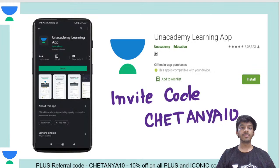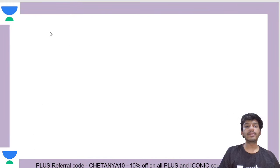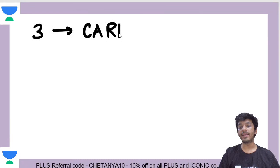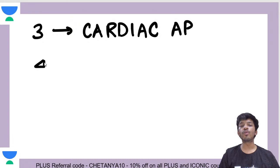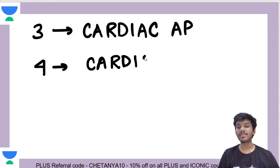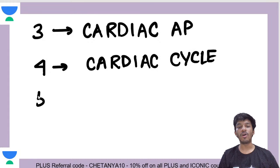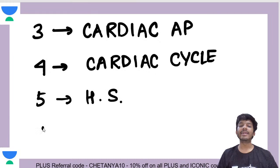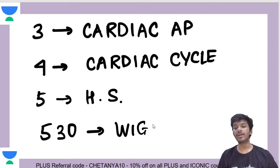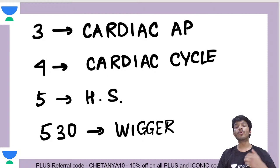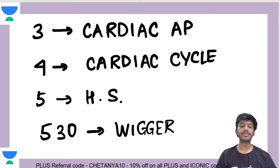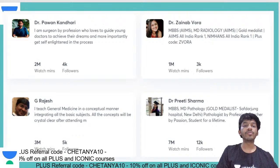Today's schedule: at 3 o'clock we are starting with cardiac action potentials; at 4 o'clock there's a session on cardiac cycle — very important; at 5 we'll have a session on heart sounds; and at 5:30 I'll have a session on Wiggers diagram. These are all the sessions we're doing today in a continuous manner with short breaks in between.